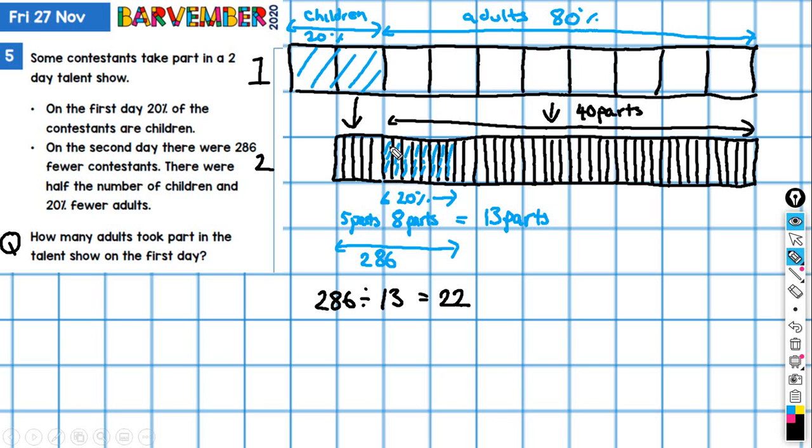We are asked how many adults took part in the talent show on the first day. This was the bit that represented the adults. I took this down from here. There are 40 parts there, so we need 22 times 40, which gives us 880 adults on the first day.